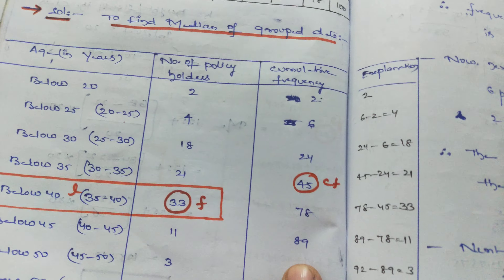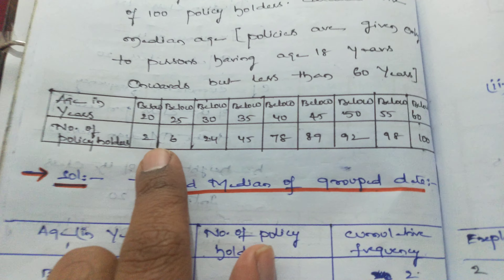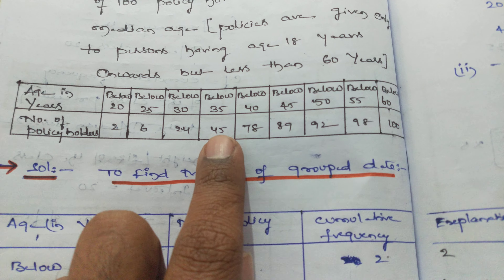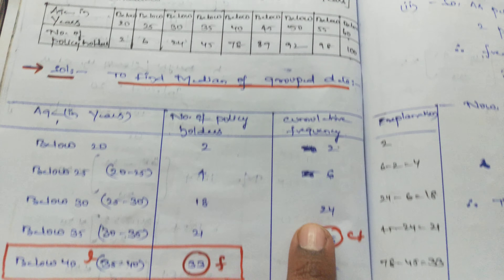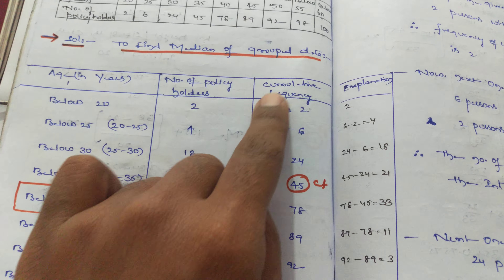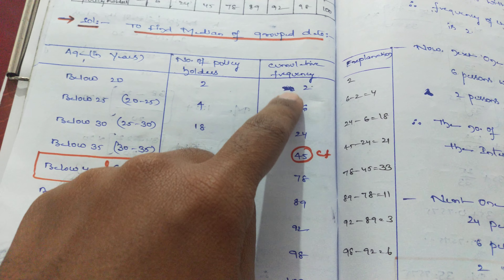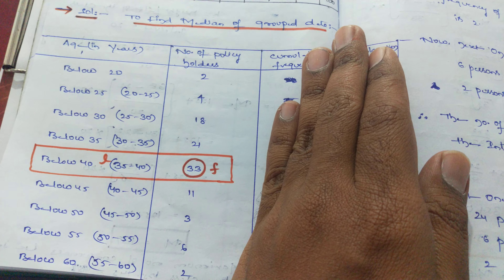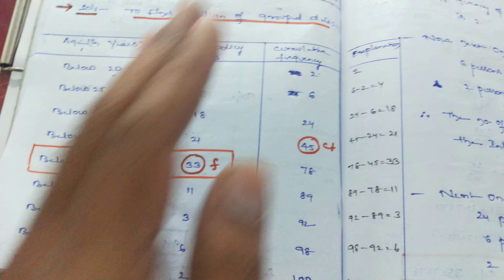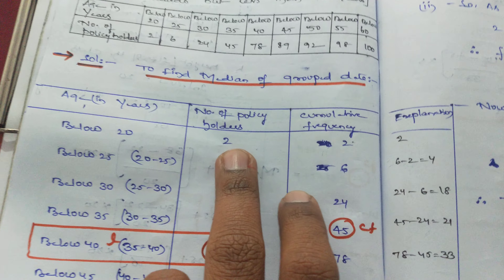In the question, the cumulative frequency values given are: 2, 6, 24, 46, 78, 89, and so on. Write these values as-is in the column. Now, whatever values they gave in the question, you copy them as they are. Then we will see how to convert from cumulative frequency to actual frequency. See the first observation as it is in the frequency column.